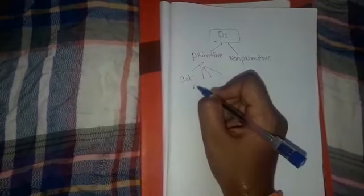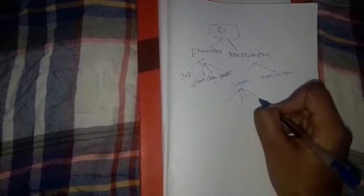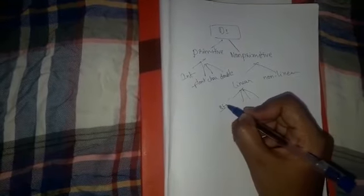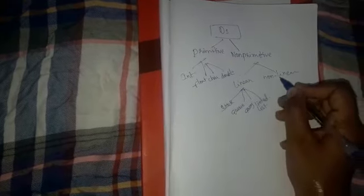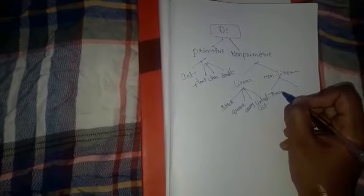Primitive data structures can be divided into four types: int, float, char, double. Non-primitive data structures can be divided into two types: linear and non-linear. Linear can be divided into four types: stack, queue, array, linked list. Non-linear can be divided into two types: trees and graphs. We have another one also - files.